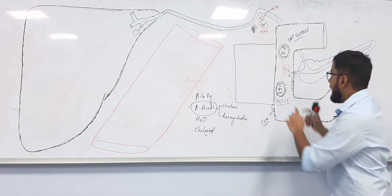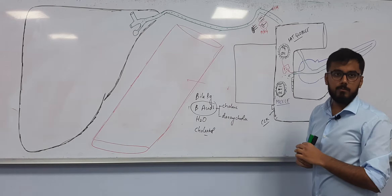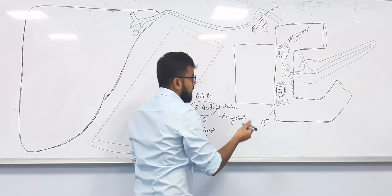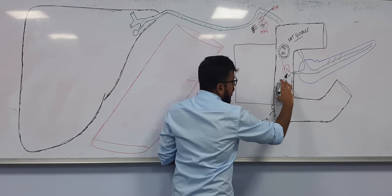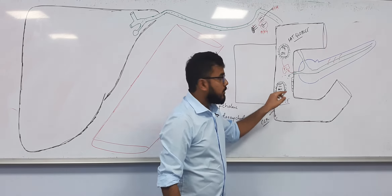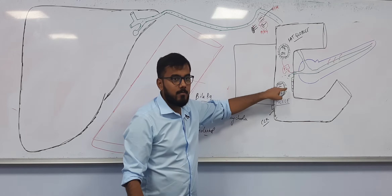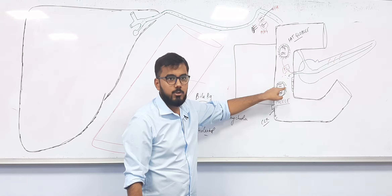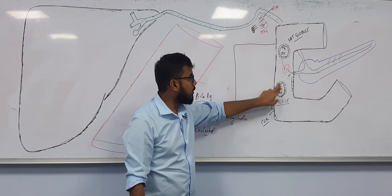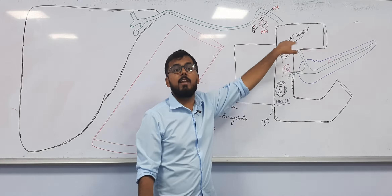When the micelle enters the enterocyte, does the entire unit enter or only the core particles? If all the bile acids entered the enterocyte there would be a deficiency of bile. So only the core particles — free fatty acids, monoacylglycerol, and cholesterol — enter the enterocyte. The bile acids remain behind for recycling with the next fatty meal.